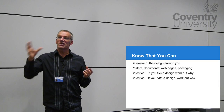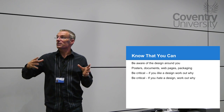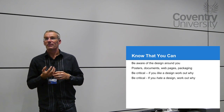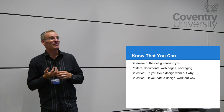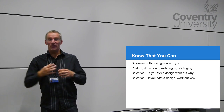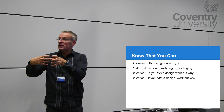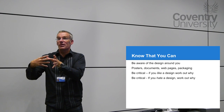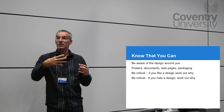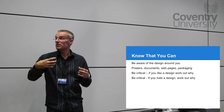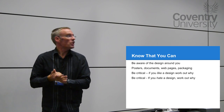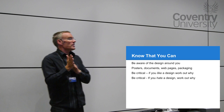It goes back to dispensaries and hospitals. The old-fashioned dispensaries had poisons in ribbed blue bottles — blue so you could see it was poison, ribbed so if you were blind you knew it was dangerous. Blue is associated with poison, so we tend to avoid it in food contexts.